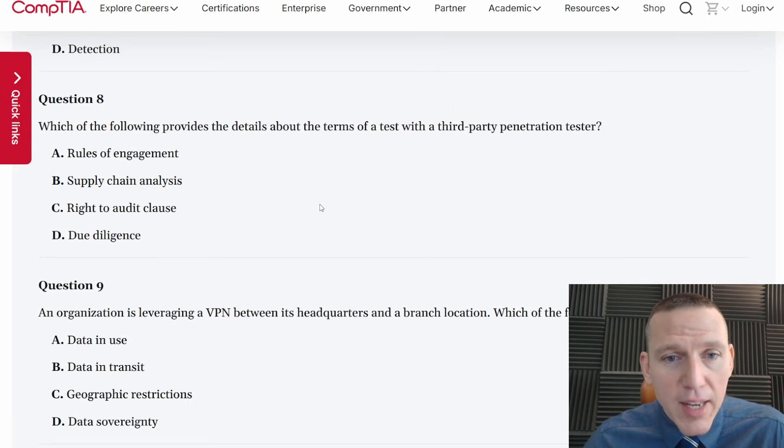Question eight, which of the following provides the details about the terms of a test with the third party penetration tester? This is a contract document. I want to think about it before I look at the answers. Terms of engagement. I think it's terms of engagement for CompTIA. Let's take a look. Rules of engagement. Yeah. Rules of engagement, supply chain analysis, right to audit clause, due diligence. It's rules of engagement.